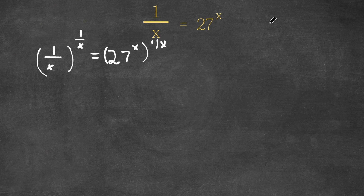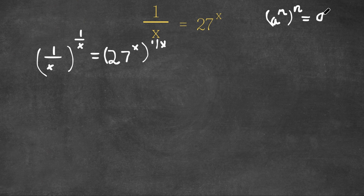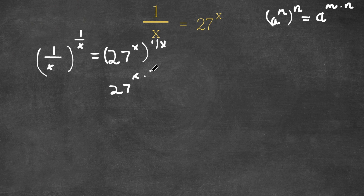Now, if we have something in the form a to the power of m to the power of n, this is simply equal to a to the power of m times n. So as you can see here, we have 27 to the power of x to the power of 1 over x, which would equal 27 to the power of x times 1 over x.